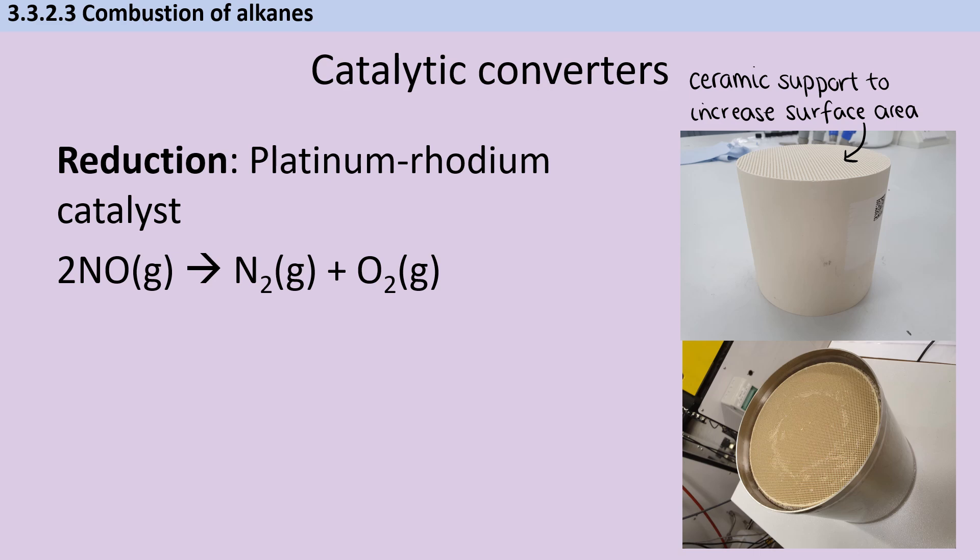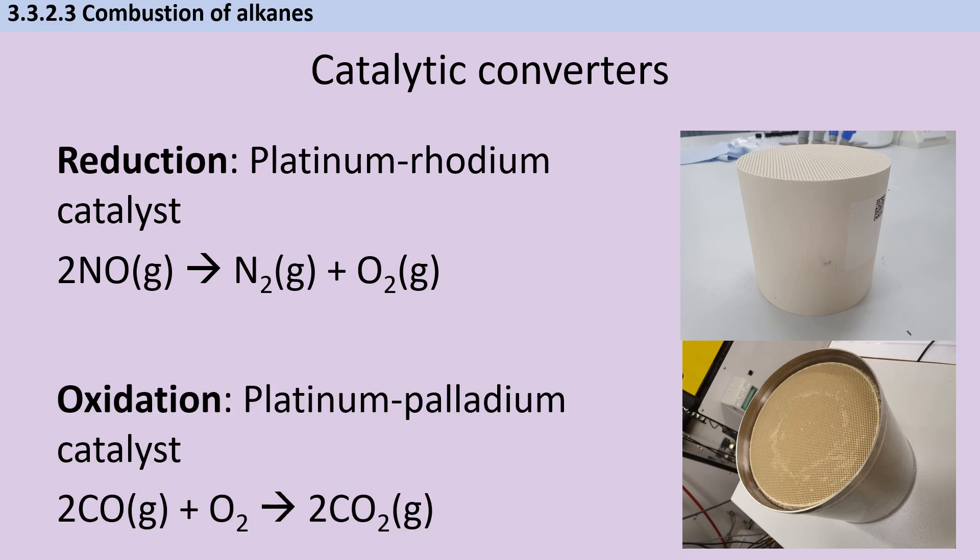So within a typical catalytic converter, a platinum rhodium catalyst will be used to reduce nitrogen monoxide to make nitrogen gas and oxygen. And in the same catalytic converter, a platinum palladium catalyst oxidizes carbon monoxide to make carbon dioxide. Obviously, this isn't a particularly good thing for the environment, but it does make it safer for people living in cities.